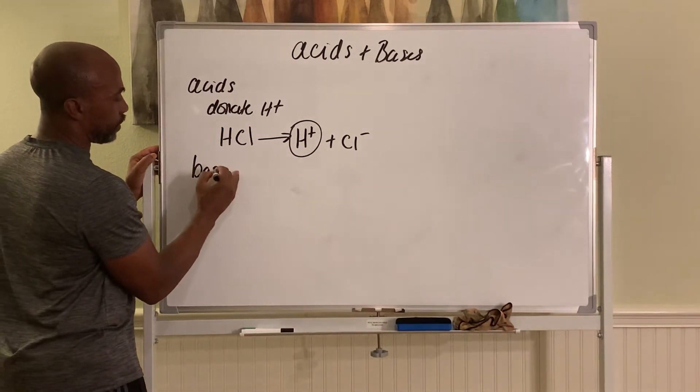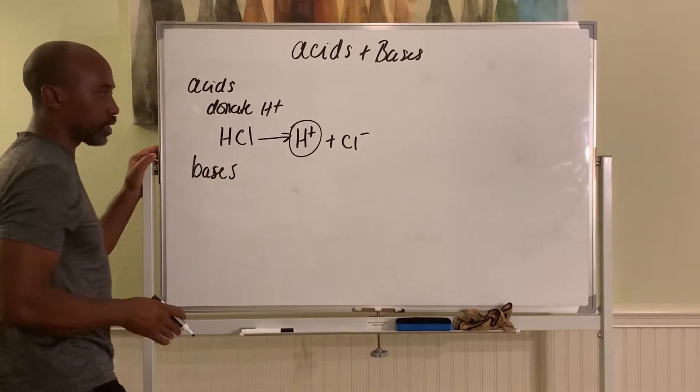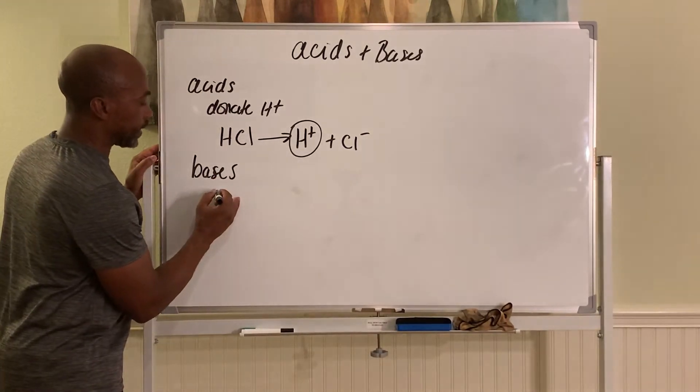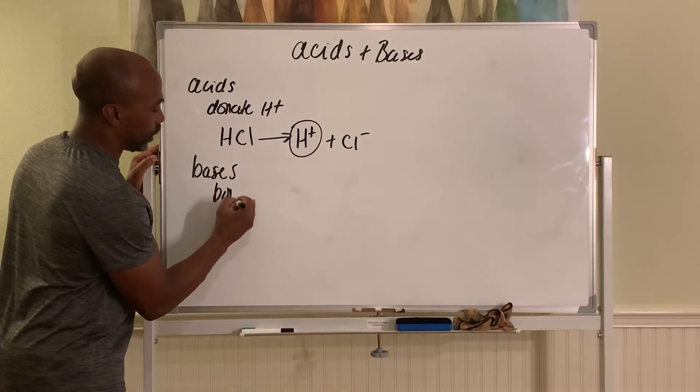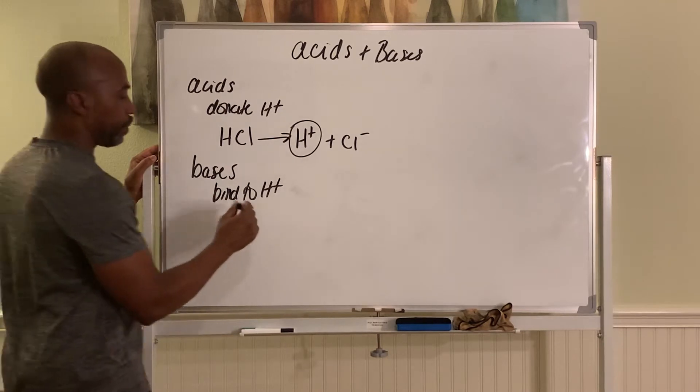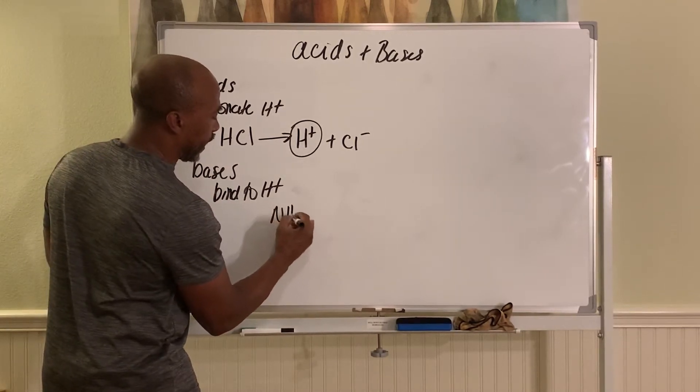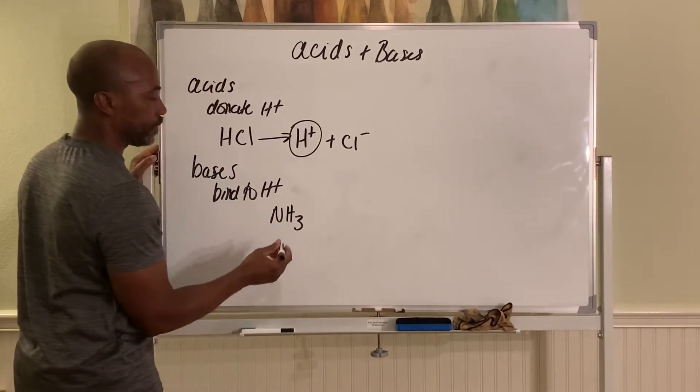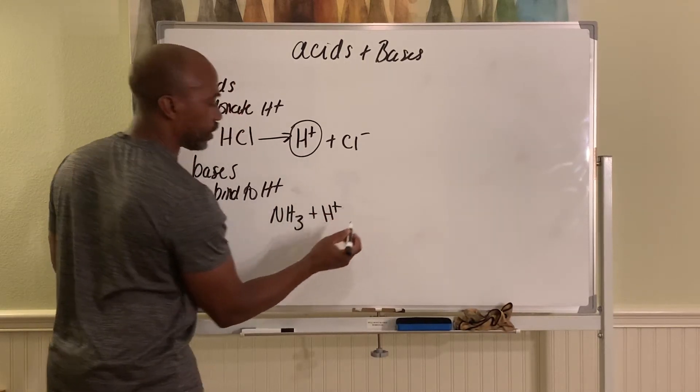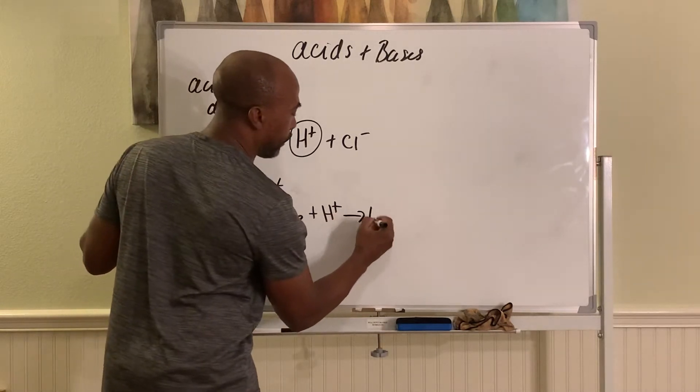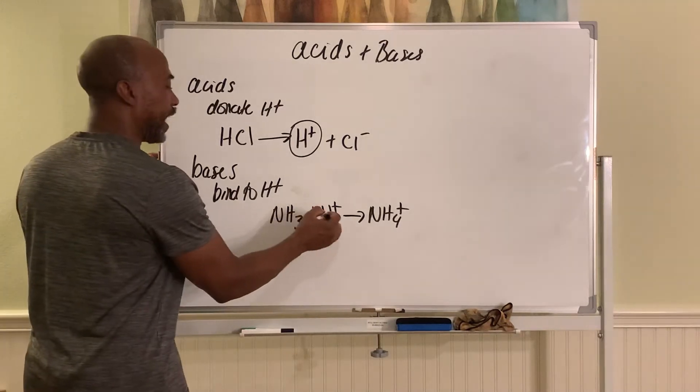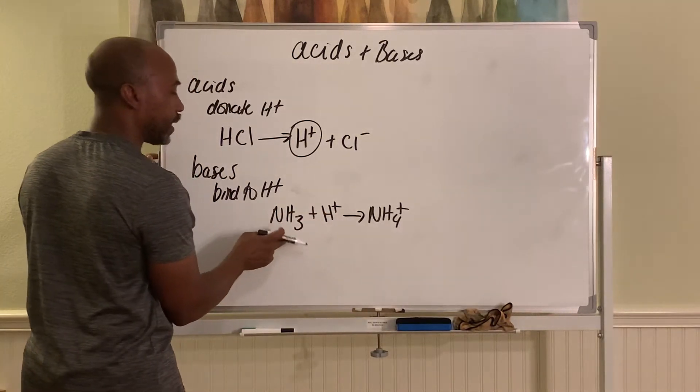Bases - this is a very simplistic discussion of acids and bases - bases are molecules that bind to H plus in solution. For example, ammonia NH3 will bind to H plus in solution to form ammonium. So the fact that it binds to it makes ammonia a base.